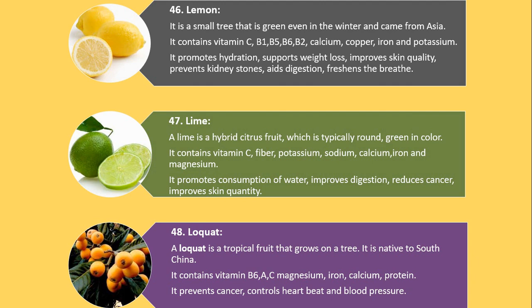Number 48. Loquat. A loquat is a tropical fruit that grows on a tree. It is native to South China. It contains vitamin B6, A, C, magnesium, iron, calcium and protein. It prevents cancer and controls heartbeat and blood pressure.